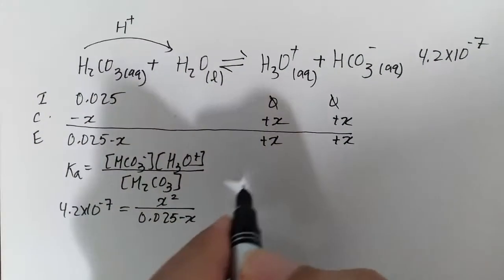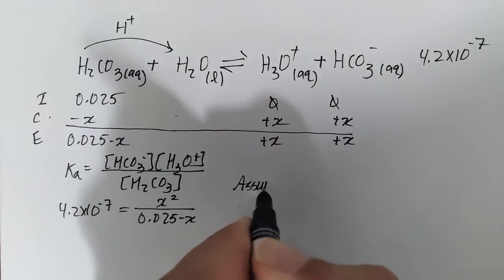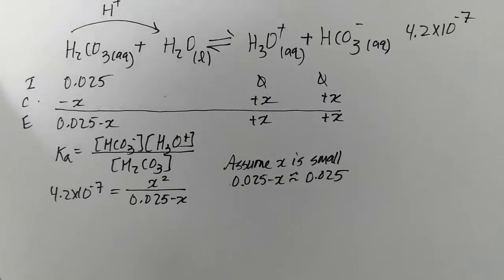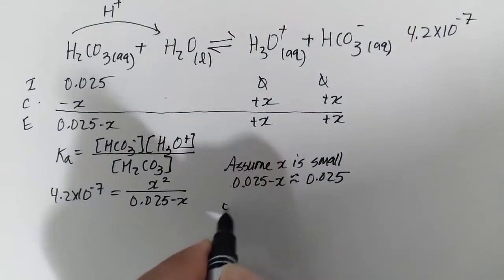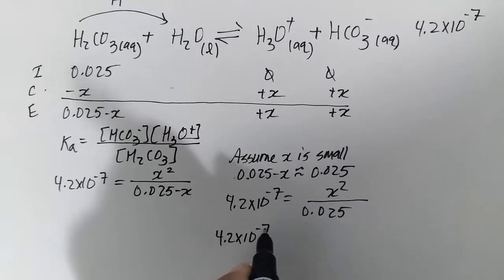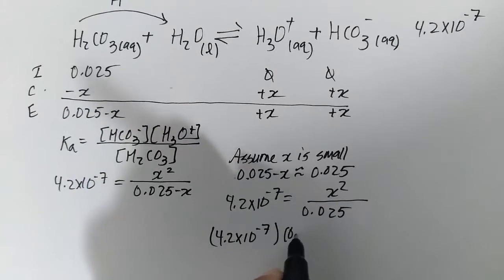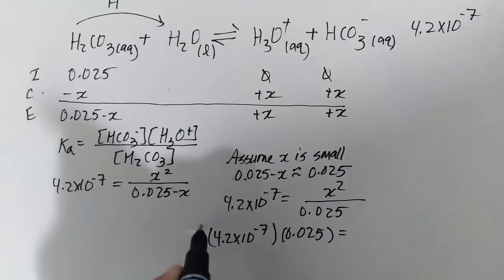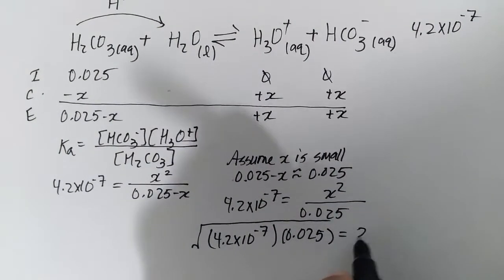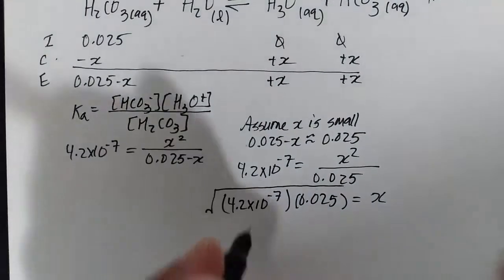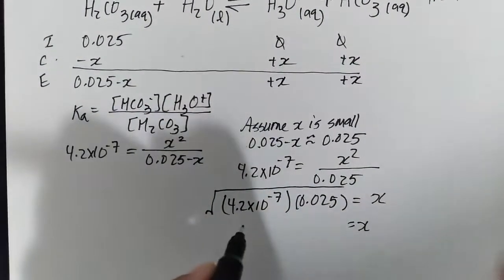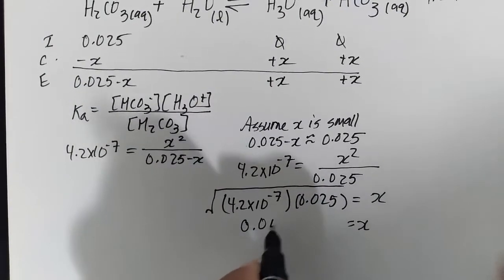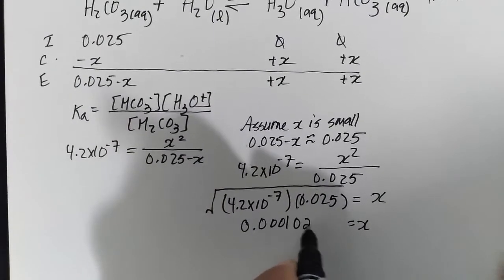So x^2 divided by 0.025 - x. This is very small, 10^-7, so we can assume x is small. By assuming x is small, 0.025 - x becomes 0.025. Plugging that in here, cross both sides of the equation, that will give us x^2. Square root that will give us x. Skipping a couple of steps here to save some time. My calculator, I'm getting a value of x here, 0.000102 M.